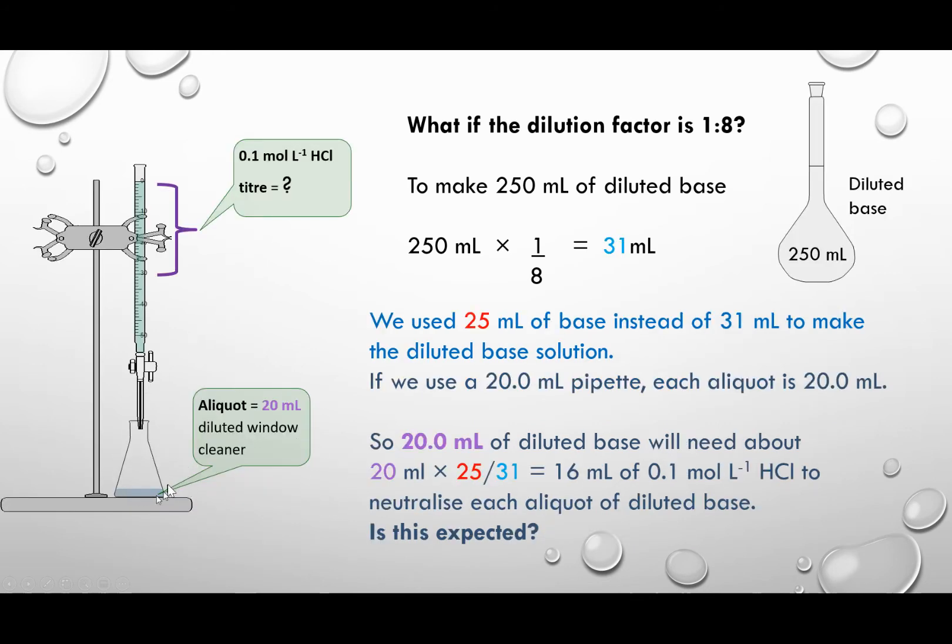So here's our diluted base in the conical flask and there's our acid. And say we now use a 20 milliliter pipette to put into the conical flask. How much acid are we going to need?